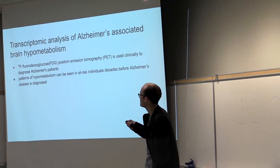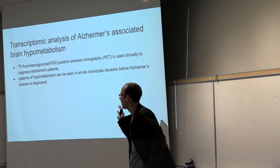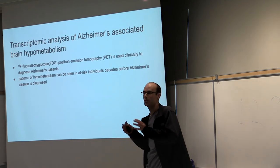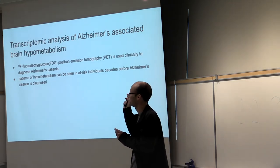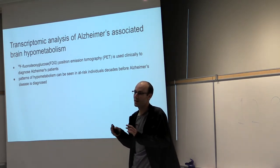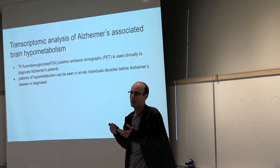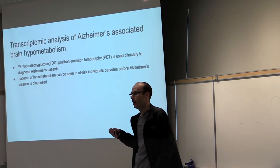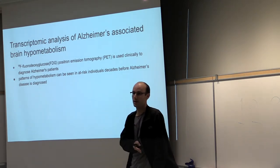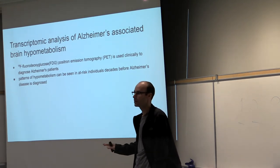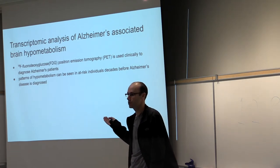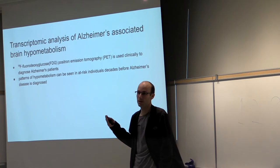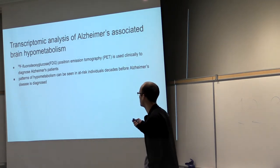One way to diagnose Alzheimer's disease is a brain scan — FDG-PET: fluorodeoxyglucose positron emission tomography. It measures how much sugar is being burned in certain parts of the brain, and you compare normal versus Alzheimer's cases. Certain parts of the brain just burn less energy. This is used clinically, even though it involves radioactive tracers. You can also see these FDG-PET patterns in individuals at genetic risk for early-onset Alzheimer's before they've been diagnosed.